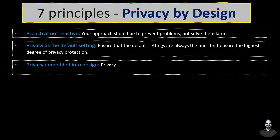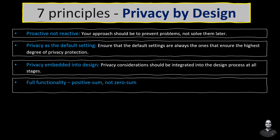The third principle is privacy embedded into design — privacy considerations should be integrated into the design processes at all stages. The fourth principle is full functionality, positive sum not zero sum — privacy protection should not come at the expense of functionality or usability. For example, an e-commerce platform uses data encryption to secure customer profiles while offering personalized recommendations based on past purchases.